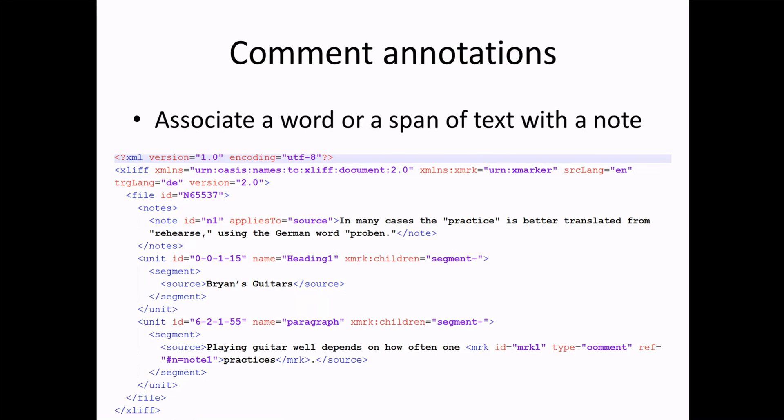Comment annotations provide further clarification for the translator. In this example, a note says 'in many cases, practice is better translated as rehearse using the German word for that.' An MRK element with type equals comment and a reference back to that note gives the translator further direction on how to best translate the term.